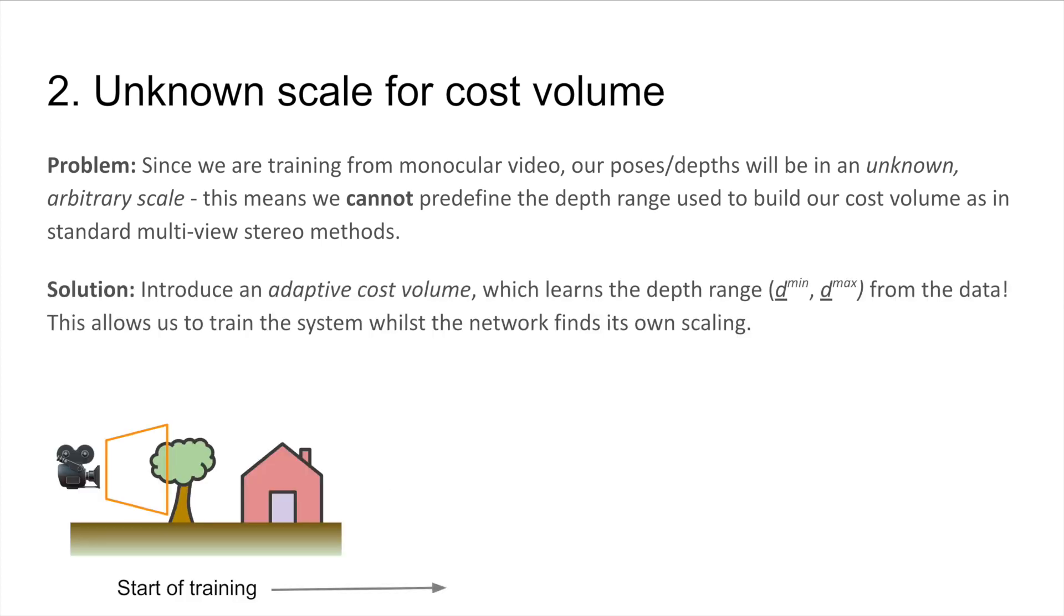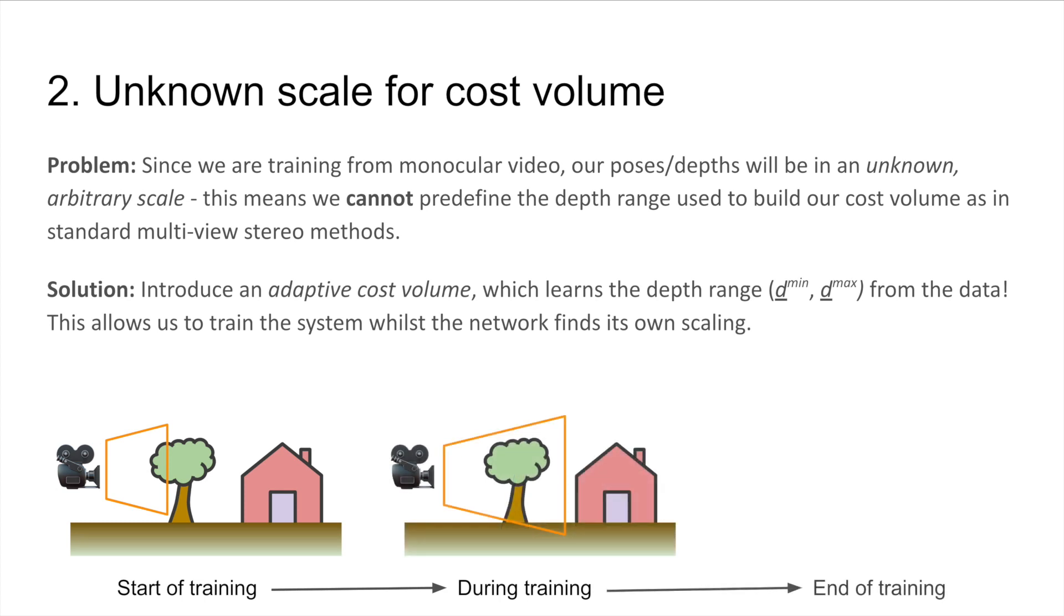To solve this, we introduce an adaptive cost volume, which learns the depth range (dmin, dmax) from the data. This allows us to train the system whilst the network finds its own scaling.